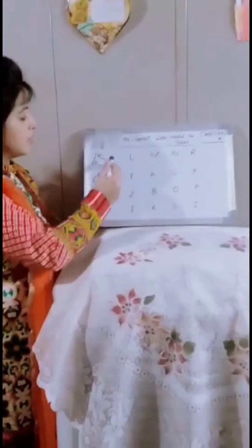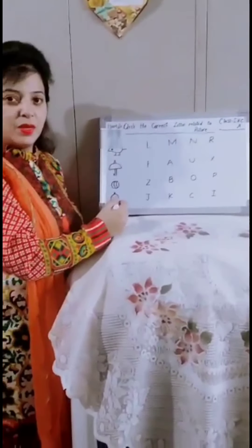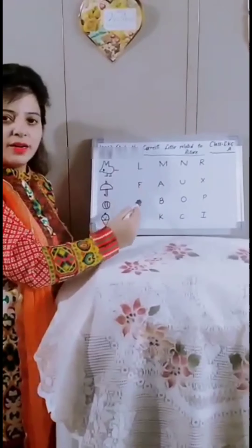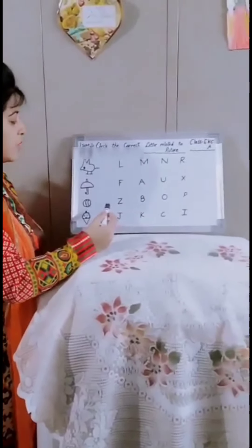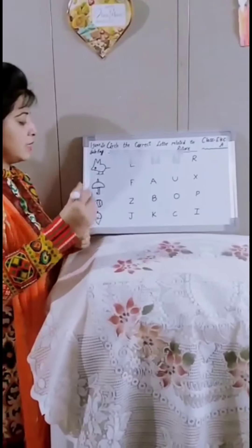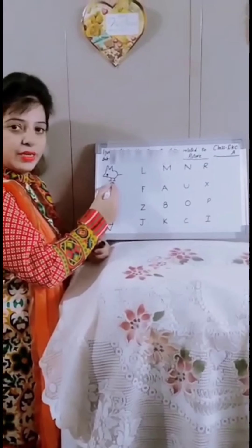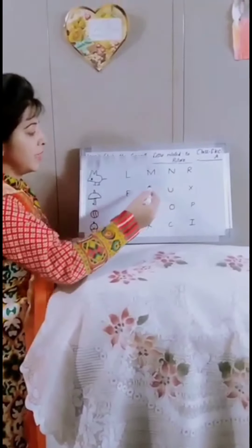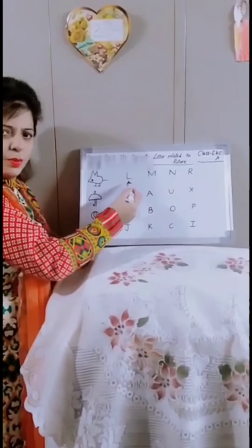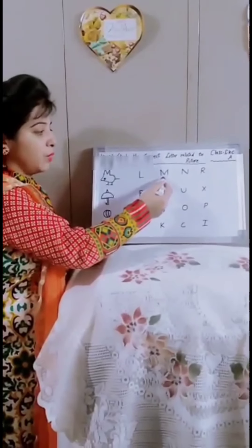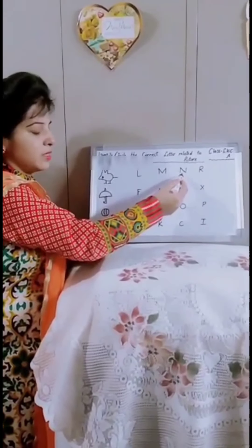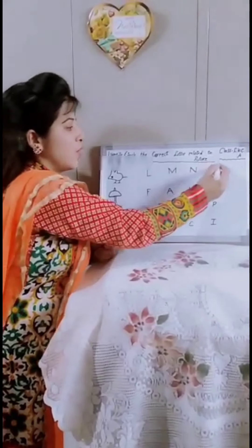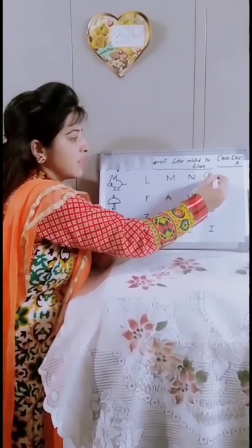Man has drawn pictures. Now we will find out the correct letter and separate it related to the picture. First of all, tell me which picture is this? R for rat. Now we will find out the correct letter. L for lollipop? No. M for mango? No. N for nest? No. R for rat. Now we will circle it.